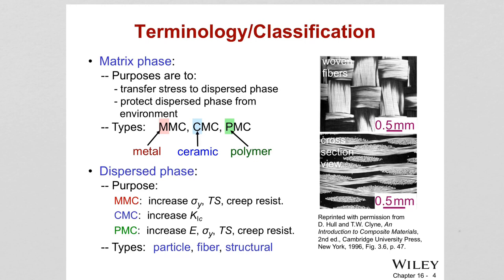In particle reinforced composites, we have large particle or dispersion strengthened. Fiber reinforced composites can be discontinuous or continuous. The properties of a composite depend on the properties of the dispersed phase and the matrix phase, the relative amount of each phase, and the geometry of the dispersed phase — its size, shape, distribution, and orientation. It also depends on the bonding strength between the dispersed phase and the matrix, because stress must transfer from matrix to fiber.